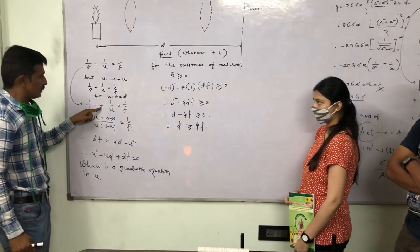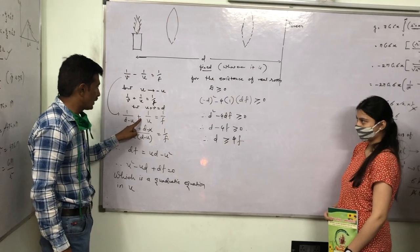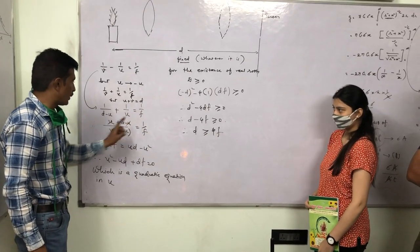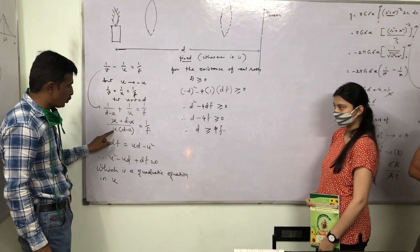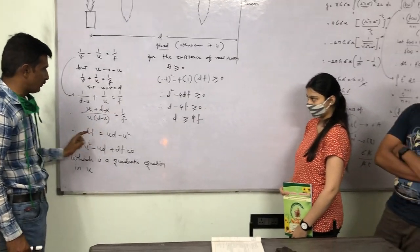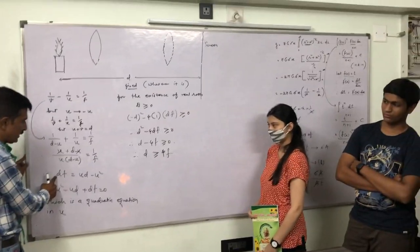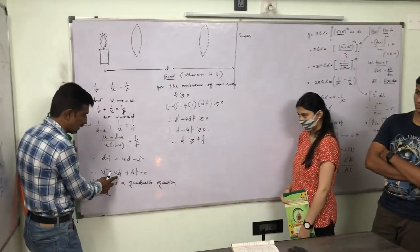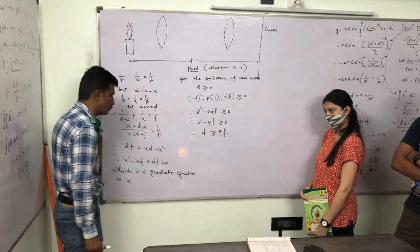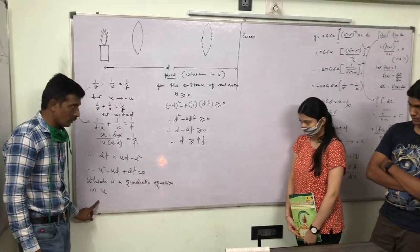So 1/(D-U) + 1/U = 1/F. Now we are taking LCM: U(D-U). In the numerator, the terms simplify. Finally, DF = UD - U². So U² - UD + DF = 0, which is a quadratic equation in U.